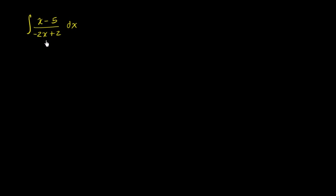The key here to realize is we have a rational expression where the numerator has the same degree or higher than the denominator. In this case, the numerator and the denominator have the same degree. And whenever you see something like that, it's probably a good idea to divide the denominator into the numerator.